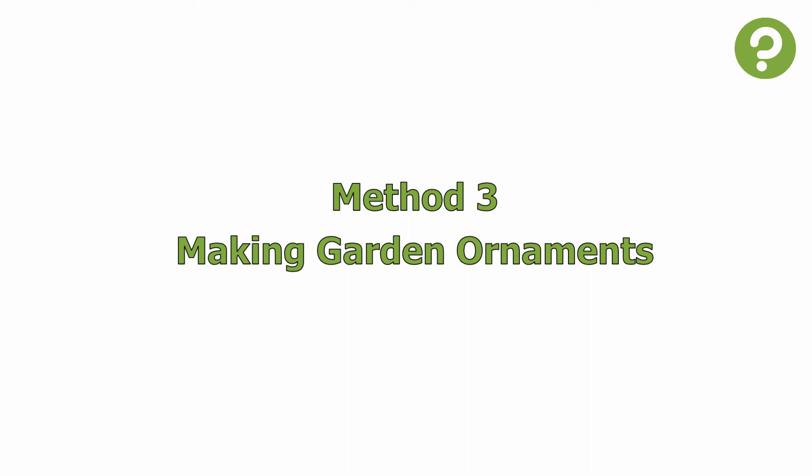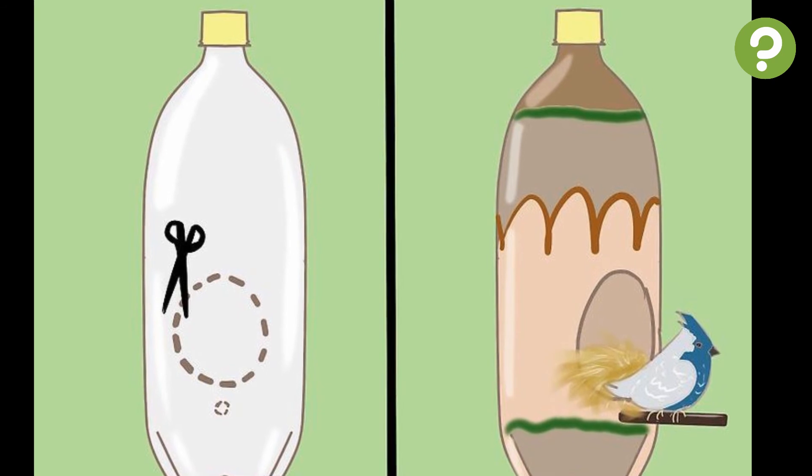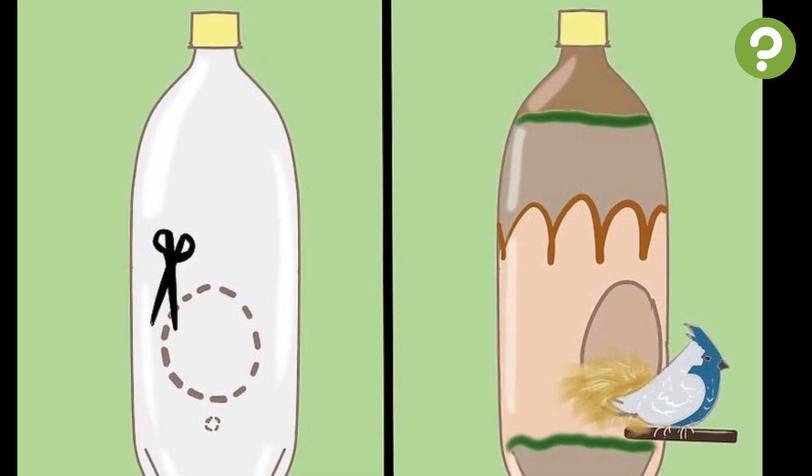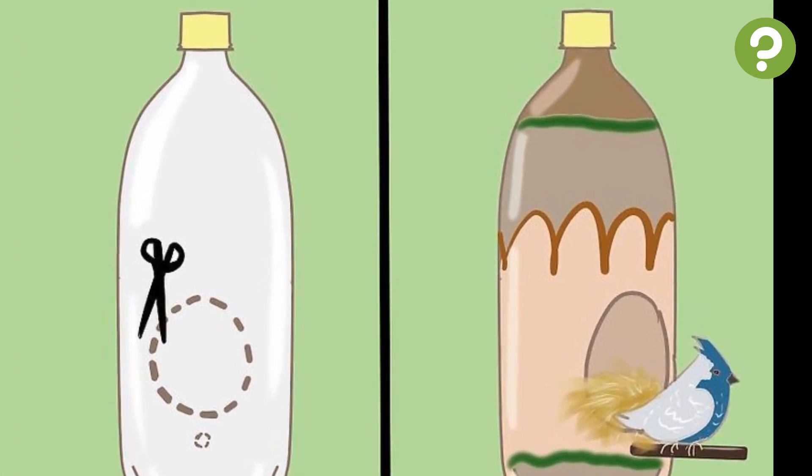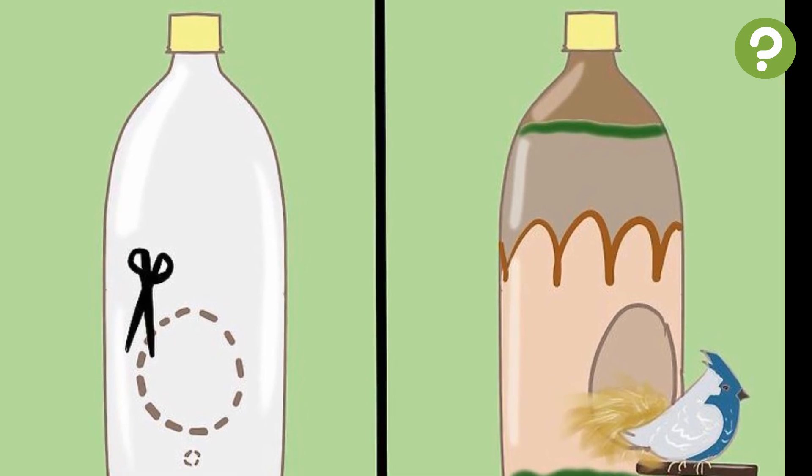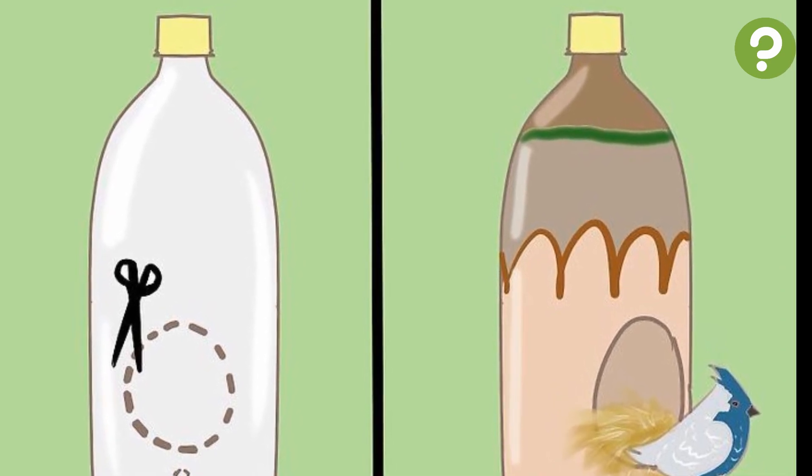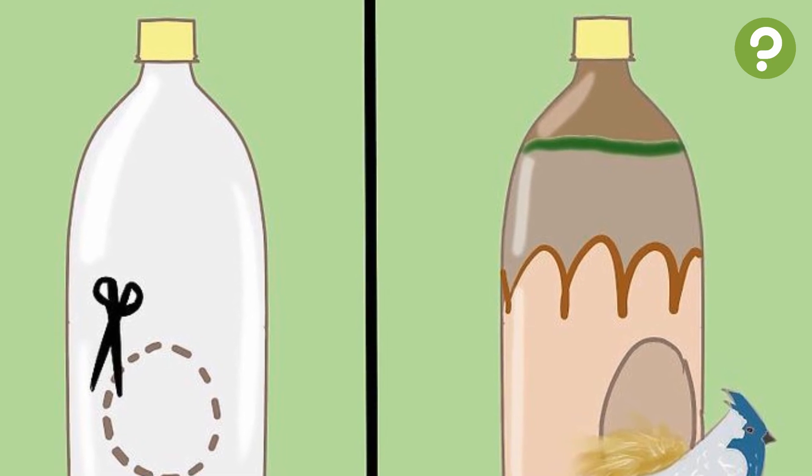Method 3 – Making Garden Ornaments. 1 – Make a birdhouse with a 2-liter or large plastic jug. Cut a round circle in the side of the bottle near the bottom. Make sure the hole is big enough for a bird to get through. Find a wooden or plastic stick for the bird to land on.